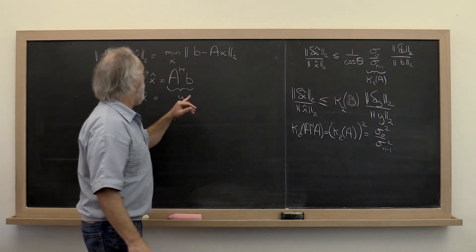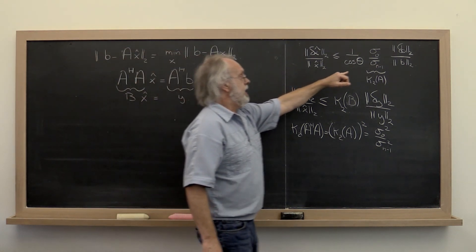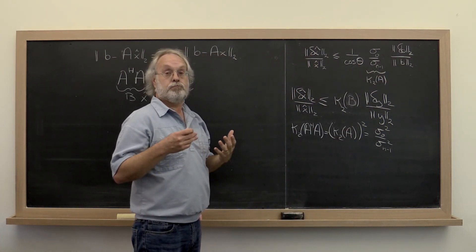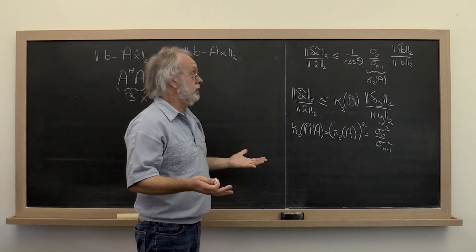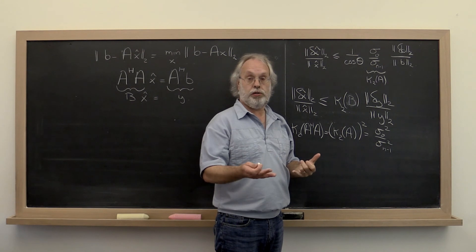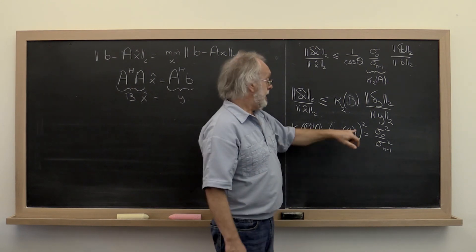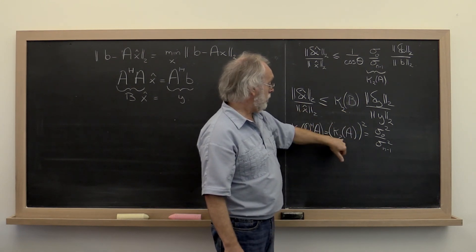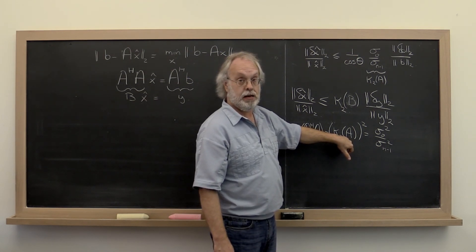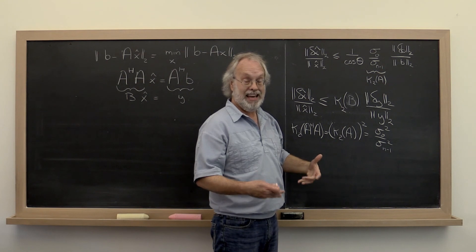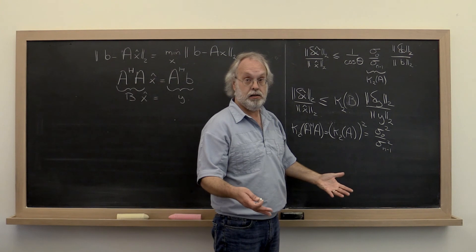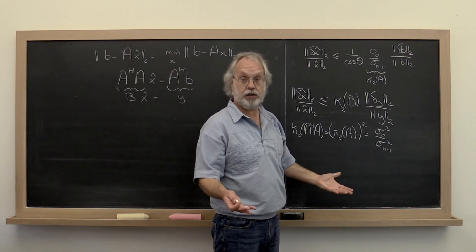What does that mean? Let's say you start with a problem where the relative error is such that you had eight digits of accuracy. And let's say that you have a condition number of 10 to the fourth. That 10 to the fourth is now squared. So now you have a 10 to the eighth. That means that you may lose eight digits of accuracy. You started with eight digits of accuracy. You may have no digits of accuracy left whatsoever.